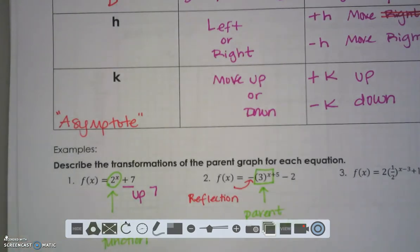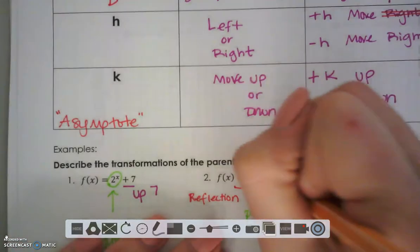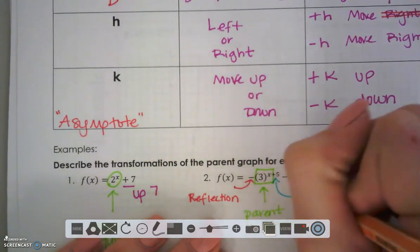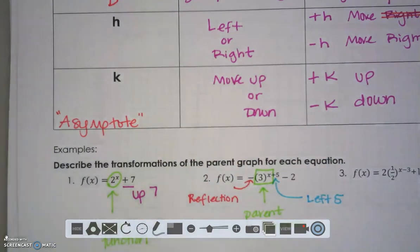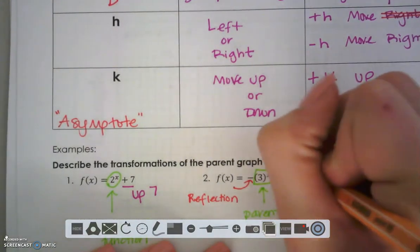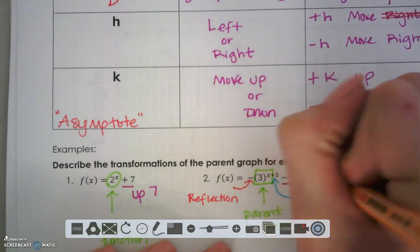We now have something up by X. And it's a plus 5. So we're going to remember to do the opposite and go left 5. And this negative 2 way out back, that's down 2.